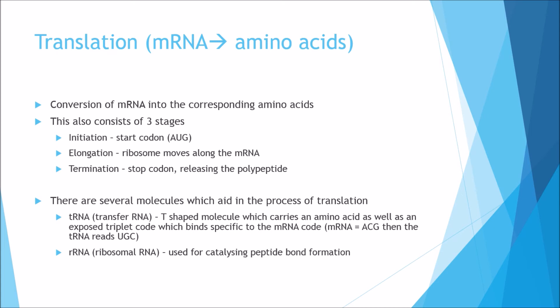There are several molecules which aid in the process of translation. One is tRNA, which stands for transfer RNA. This is a T-shaped molecule which carries an amino acid as well as an exposed triplet code, and it's this exposed triplet code which binds by hydrogen bonds to the mRNA code. So if the mRNA code read ATG, then the tRNA will read UGC, corresponding to the mRNA code, and at the end you have the amino acid. We also have rRNA, which stands for ribosomal RNA, and this is used for catalyzing peptide bond formation.